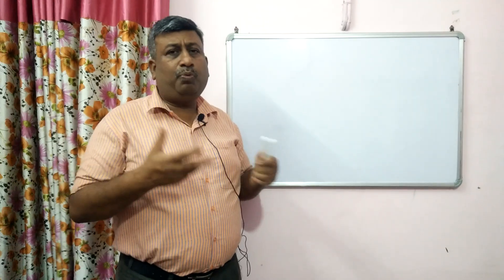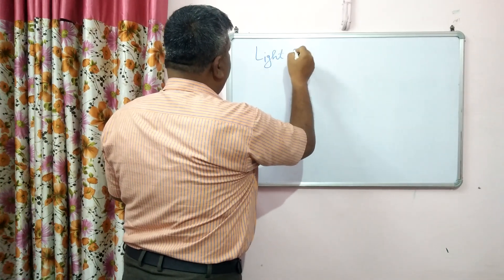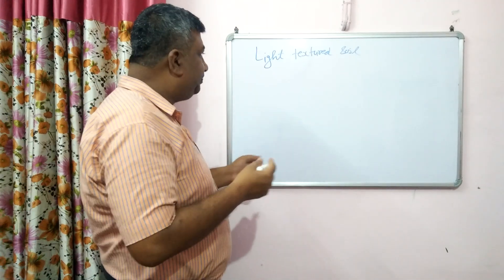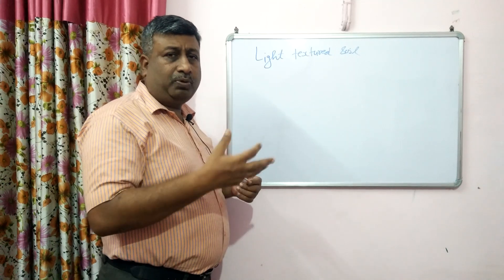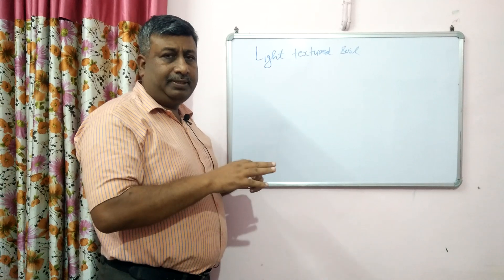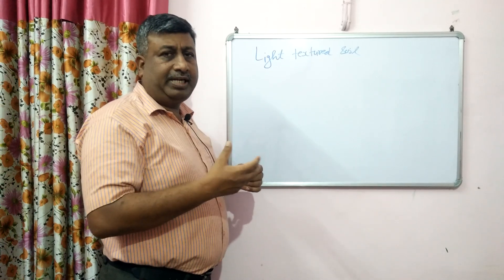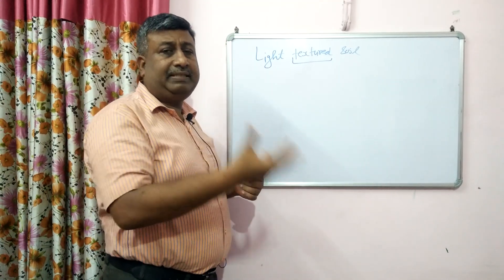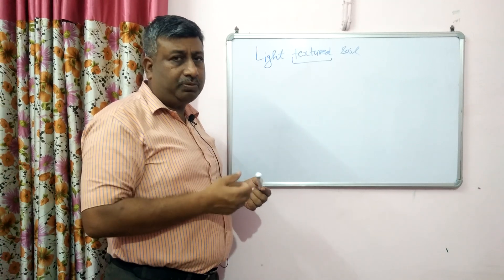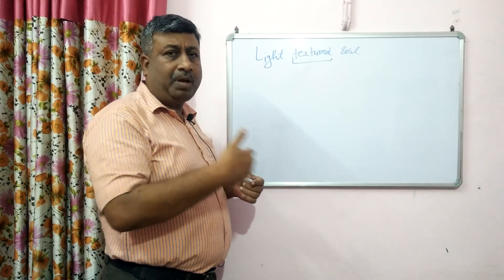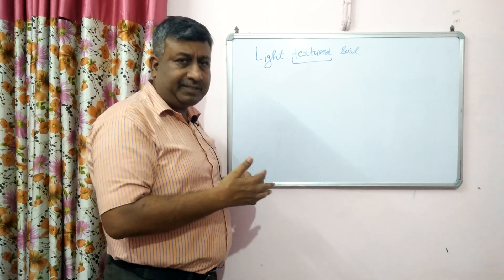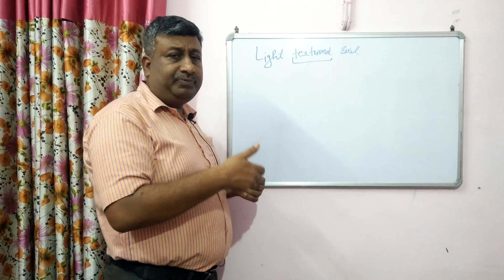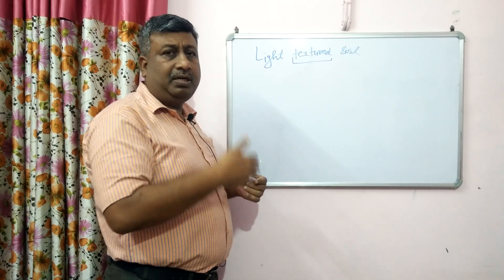First of all, we should know what is light textured soil. When we talk about texture, there may be heavy textured soil, light textured soil, or medium textured soil. Light means when we use any plow or harrow, the force or resistance offered by the soil is measured, and on this basis we can categorize soil. Texture is related to the relative proportion of sand, silt, and clay.